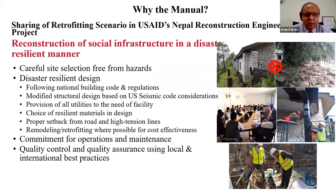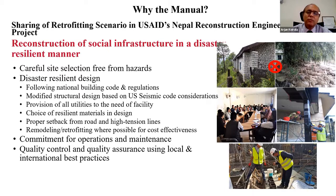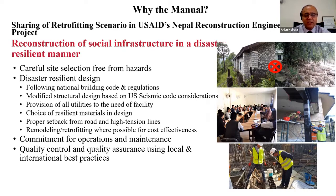From the framework we drew elements that contribute to resilient design: adoption of careful site selection free from disaster - sites close to flood areas or on steep slopes need to be avoided, which is incorporated in the manual. We followed the national building code and other guidelines and regulations from government agencies, and where needed modified the structural design. We also took the opportunity to implement the US assessment code as well. There are opportunities to have choice of resilient measures using local materials in design, particularly for remodelling and retrofitting for cost effectiveness.